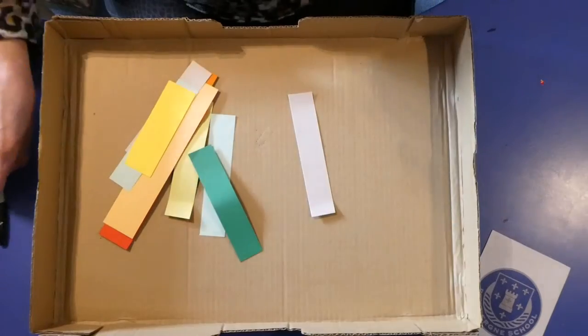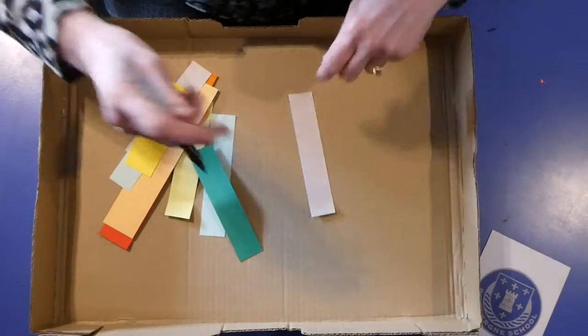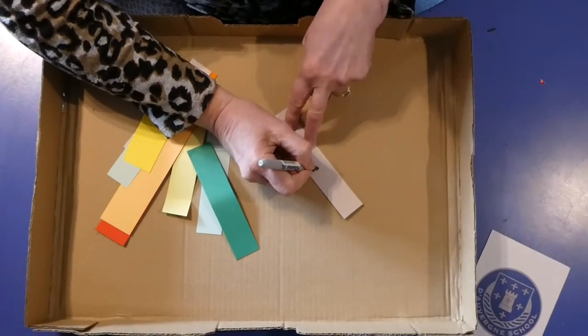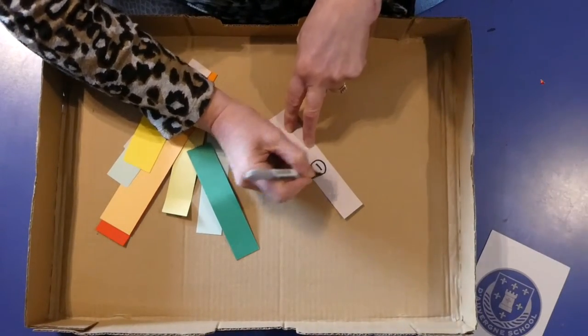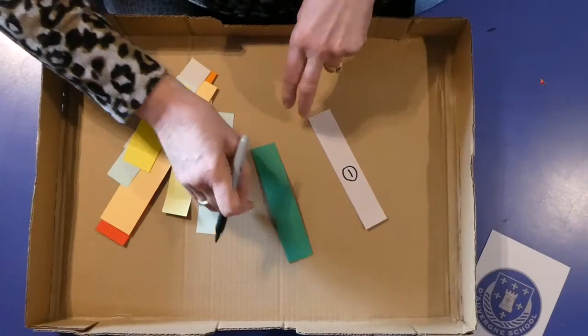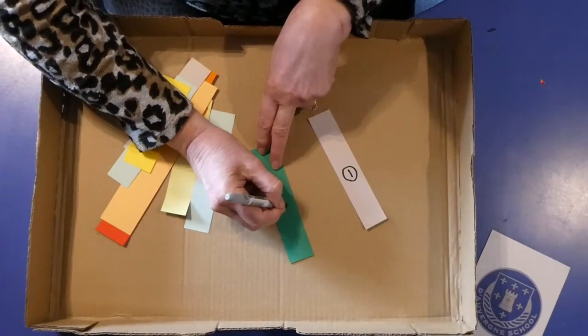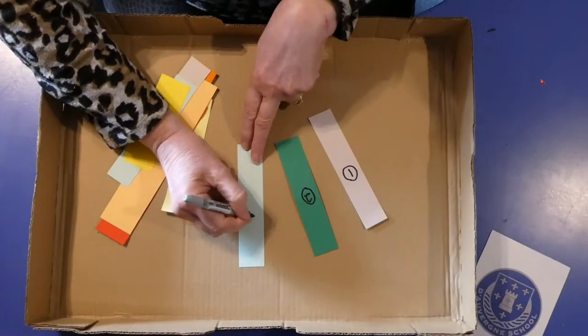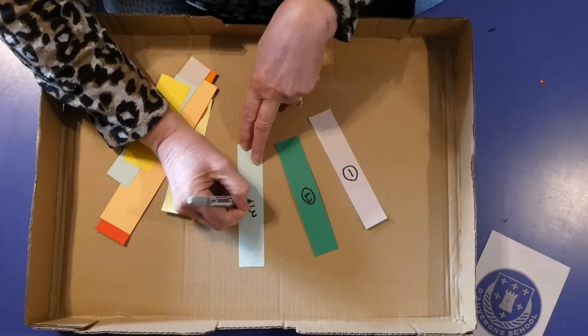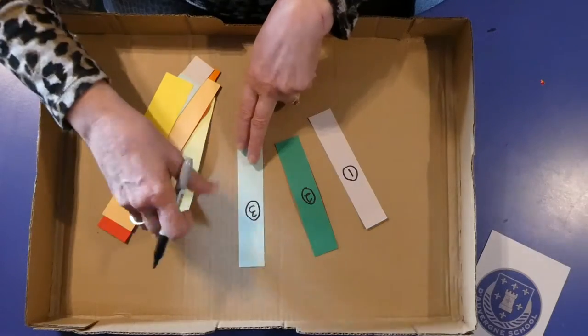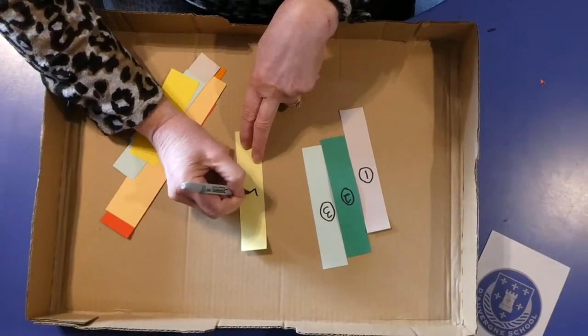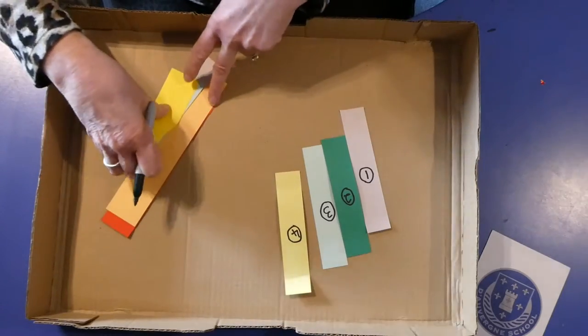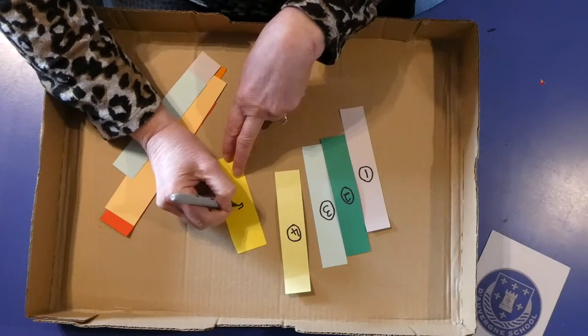Now if you want to do it just for a bit of fun we could just put some numbers. So we could have a number sequence, so on that one I'm going to put number one, on that one I'm going to put number two. So what we'd be trying to do is get our little ball to run around in a number sequence from one to ten or however many of these you want to put on your tray. You can put as many as you like on it.